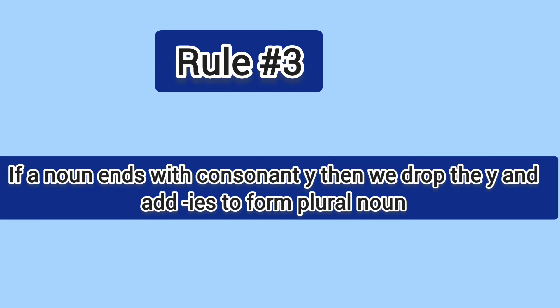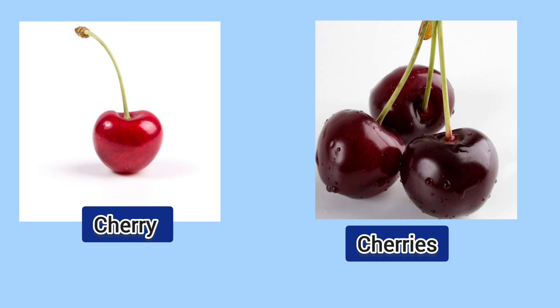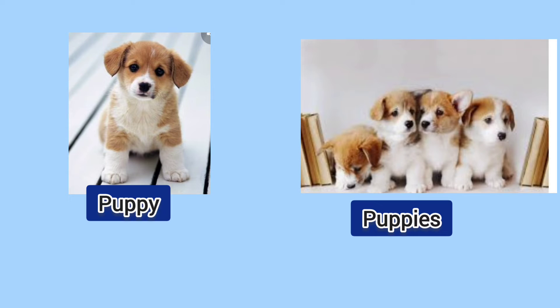Rule number three. If a noun ends with consonant y, then we drop the y and add ies to form plural nouns. For example: kitty, kitties; baby, babies; lady, ladies; cherry, cherries; puppy, puppies.